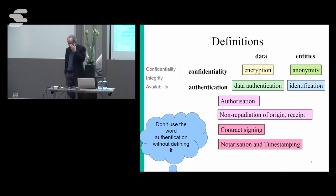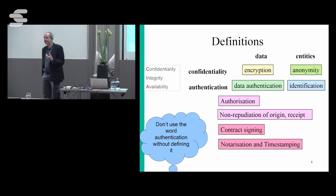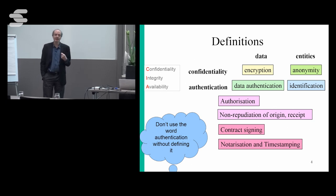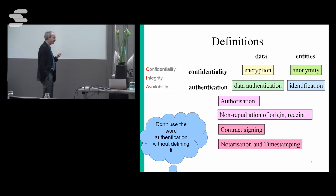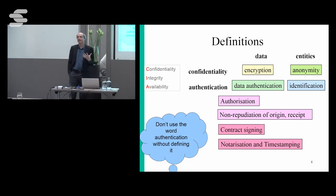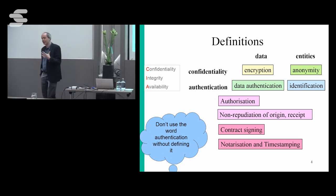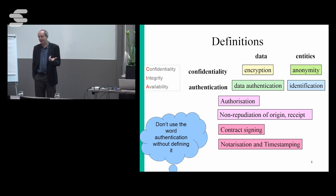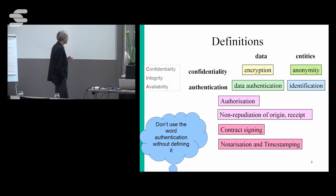Many security courses start by saying security is about the CIA: confidentiality, integrity, and availability. Confidentiality is quite important. Integrity is an interesting concept because it means something different for everybody — it can mean integrity of your data, integrity of your systems, integrity of your code — so it's a very broad concept.